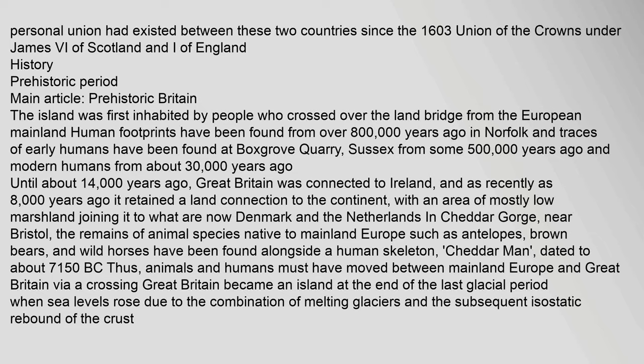In Cheddar Gorge, near Bristol, the remains of animal species native to mainland Europe — such as antelopes, brown bears and wild horses — have been found alongside a human skeleton, Cheddar Man, dated to about 7150 BC. Animals and humans must have moved between mainland Europe and Great Britain via a crossing. Great Britain became an island at the end of the last glacial period when sea levels rose due to the combination of melting glaciers and the subsequent isostatic rebound of the crust. Great Britain's Iron Age inhabitants are known as Britons; they spoke Celtic languages.